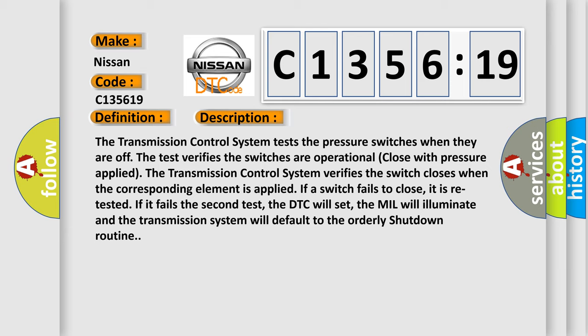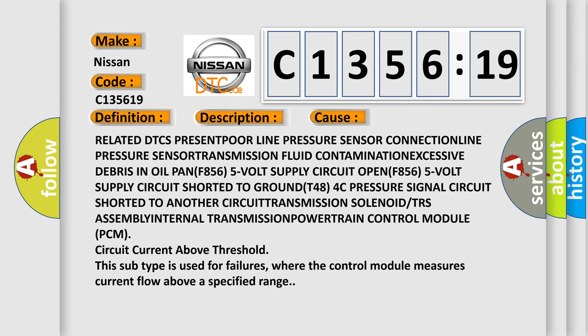If it fails the second test, the DTC will set. The MIL will illuminate, and the transmission system will default to the orderly shutdown routine.